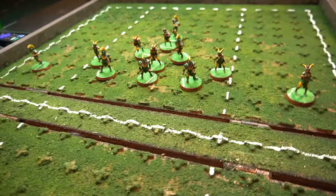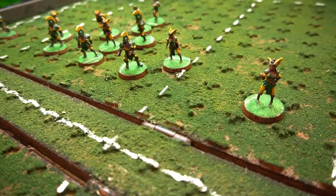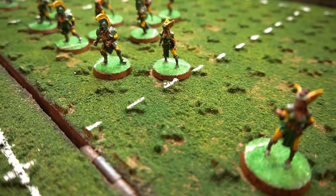And I'll label each player or each type of player with that designation. So on this team I have linemen, blitzers, catchers, and throwers.